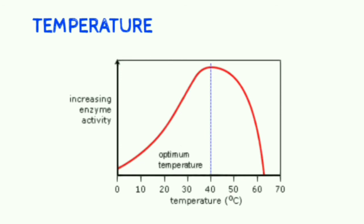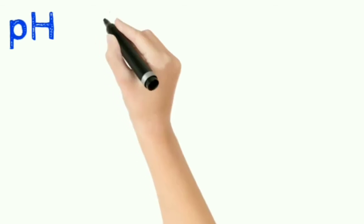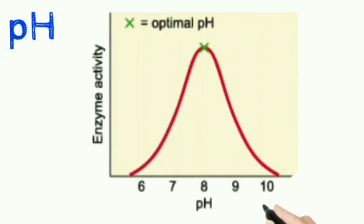Now the next factor that we have is pH. Each enzyme has its optimum pH, just like the optimum temperature, on both sides of which enzyme activity decreases. Here you can see the optimum pH is shown for this particular enzyme.